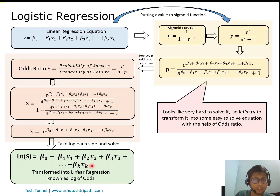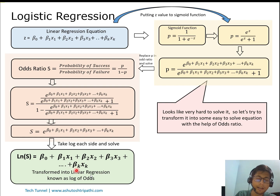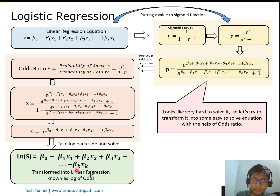Logistic regression has now become equivalent to a linear regression problem, and we solve it similarly — by minimizing the error. In linear regression, that error is the sum of squared errors: Σ(yᵢ − ŷᵢ)². However, in logistic regression we do not use the same cost function; it will be different. For now, it is reduced to a linear equation in terms of the betas.